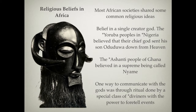Many believed in a single creator god. The Yoruba people of Nigeria believed that their chief god had sent down his son, Adudua, from heaven for his people. The Ashanti people of Ghana believed in a supreme being called Nayame. We see the theme of a supreme deity and a supreme deity sending representatives down to his people, which would be an important idea for the eventual incursion of Christianity and Islam into these territories.